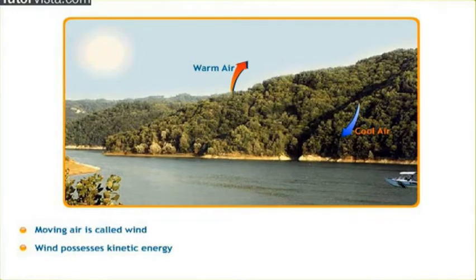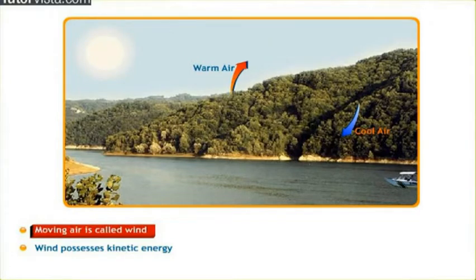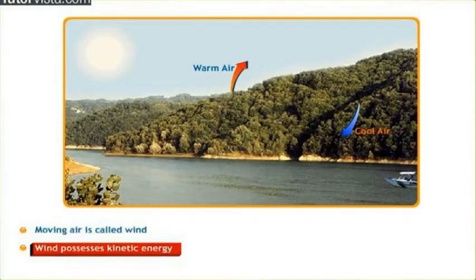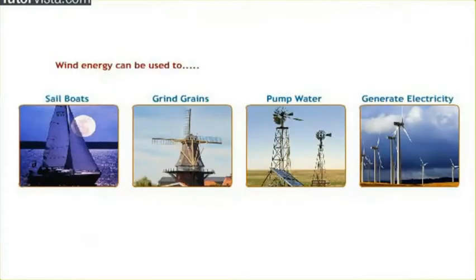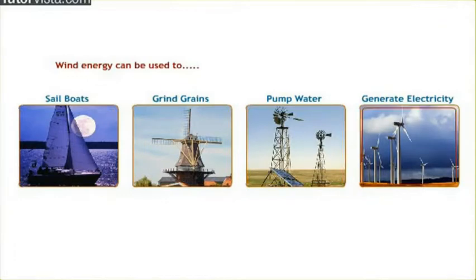Wind energy: The sun causes uneven heating of the earth's surface. Air over land heats up faster than the air over water. Warm air rises up and cool air rushes in, causing movement of air. Moving air is called wind. Wind possesses kinetic energy. Wind energy can be used to sail boats, grind grains, pump water and generate electricity.